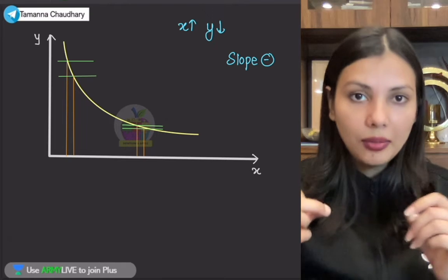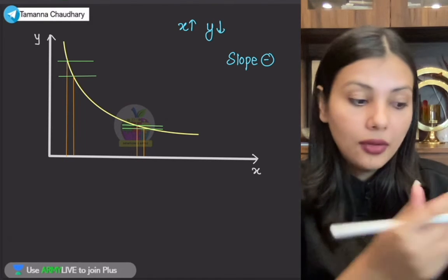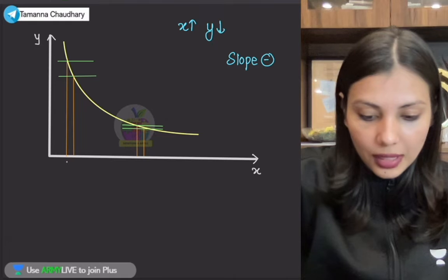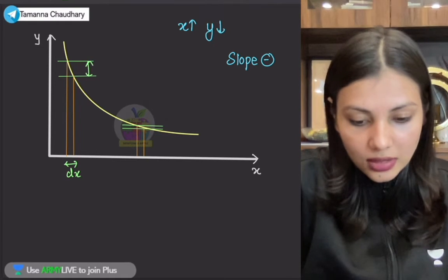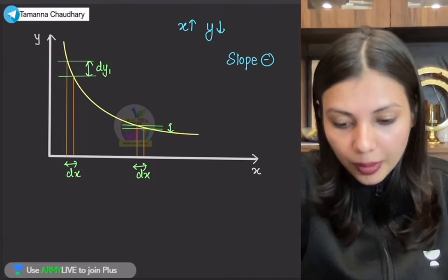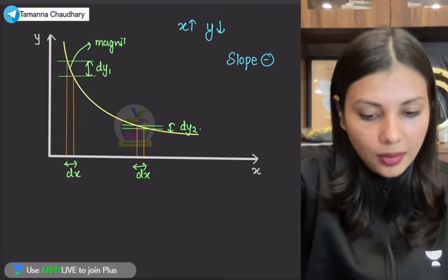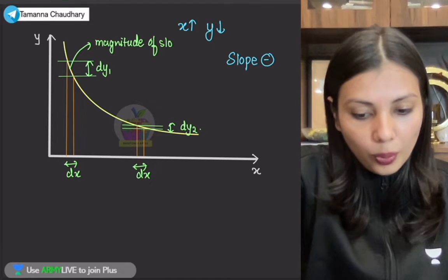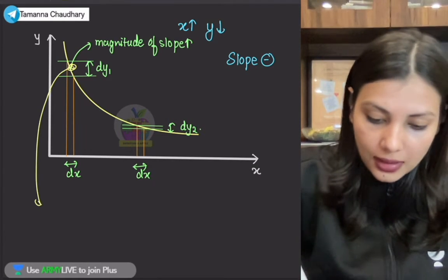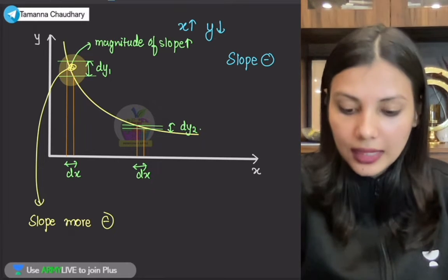Lekin kahaan par zyaada negative, kahaan par kam negative — that is going to be decided by: agar main same change X quantity mein leke aati hun, to zyaada change Y quantity mein jahaan par aayega, wahaan par magnitude of the slope zyaada rahega. Aur kam change in Y quantity jahaan par dikhni ko milega, wahaan par slope ka kam magnitude rahega. To abhi, agar main same change X quantity mein leke aati hun, to yahaan par mujhe jo change in Y quantity mein dikhni ko milega, woh bada hai. Aur baad mein, jab same change in X quantity leke aati hun, yahaan par mujhe jo change in Y quantity ko dikhni ko milega, woh chota hai. Iska matlab yahaan par magnitude of the slope bada hai. Ek to slope negative, oopar se magnitude zyaada — matlab yahaan par slope will be more negative. As you all can see, yahaan par slope more negative, yahaan par slope less negative.